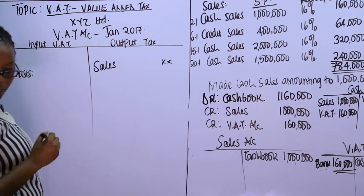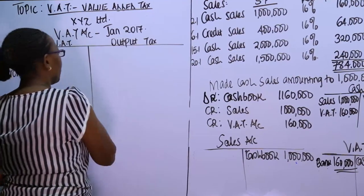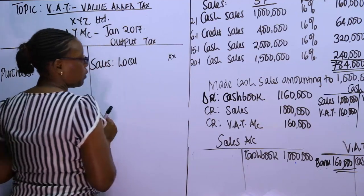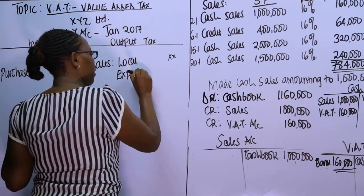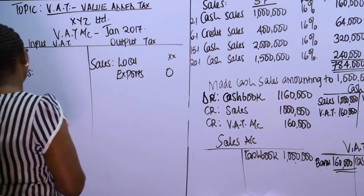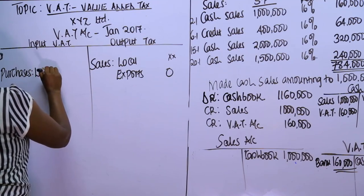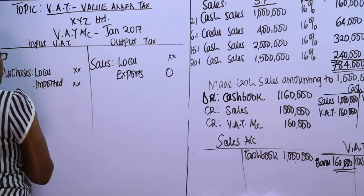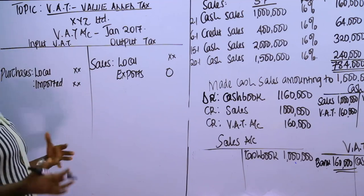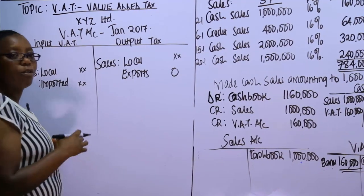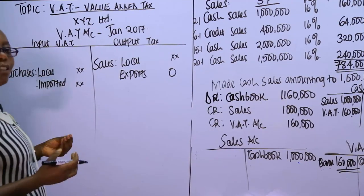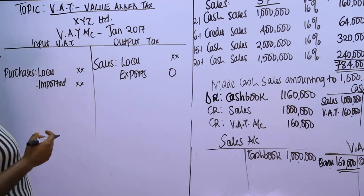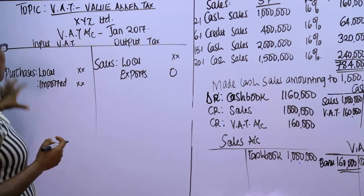Sales can be split into components: local sales, which attract VAT, and exports, which are zero rated. Similarly, purchases are split into local and imported — imported goods will also attract tax. If within a tax period you had under-declared or over-declared taxes, or you have opening inventory from the prior period as closing stock, you put it on the input side.